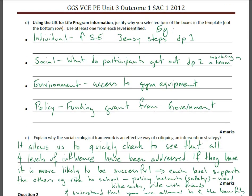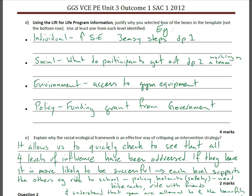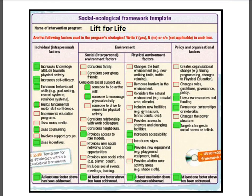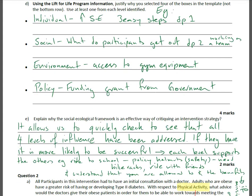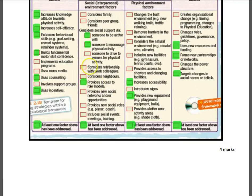Part D was to justify what you selected. An example: Individual — increased self-efficacy, example three easy steps (dot point one). Social — what do participants get out of it (dot point two), working as a team. Environment — will they now get access to gym equipment they previously wouldn't have. Policy — there's a funding grant from the government. That's just one example of each column. You could provide other examples from the document as long as it was specific to one of the ticked levels.